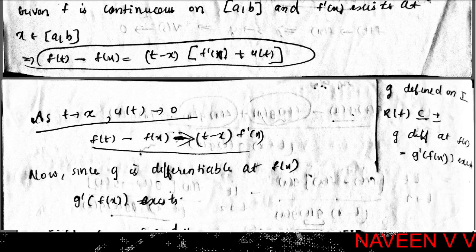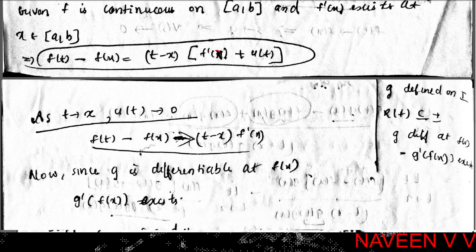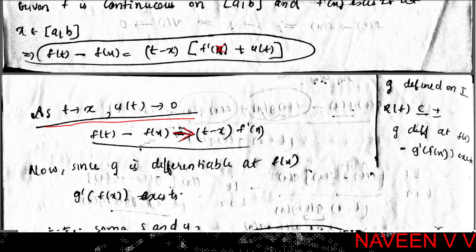For the proof: since f is differentiable at x, we can write f(t) - f(x) = (t - x)·f'(x) + u(t)·(t - x), where u(t) is an error function. As t→x, u(t)→0, so [f(t) - f(x)] / (t - x) → f'(x).